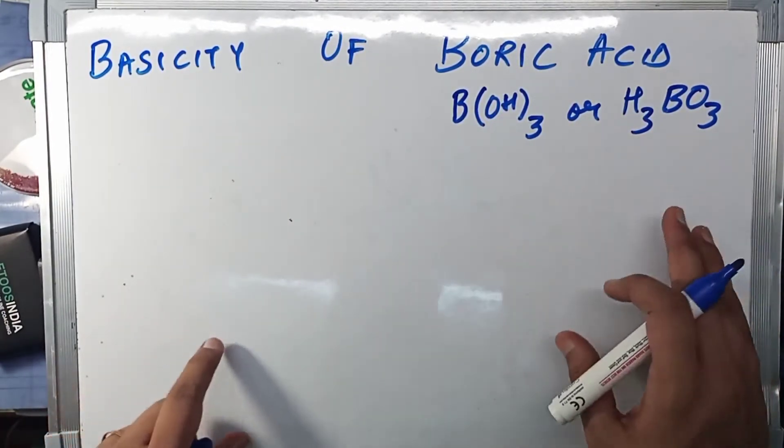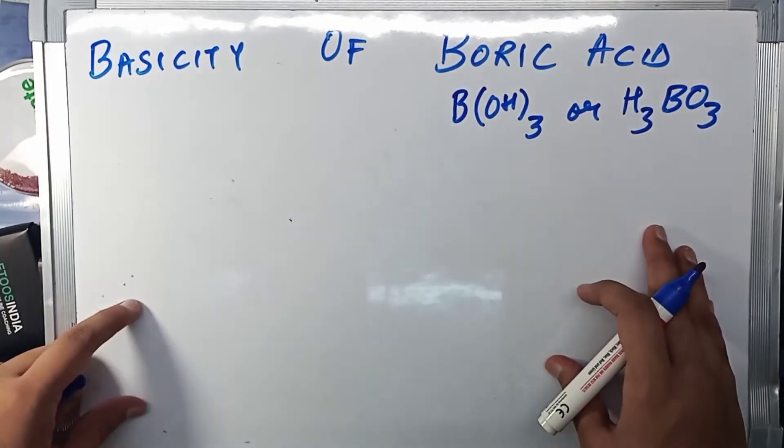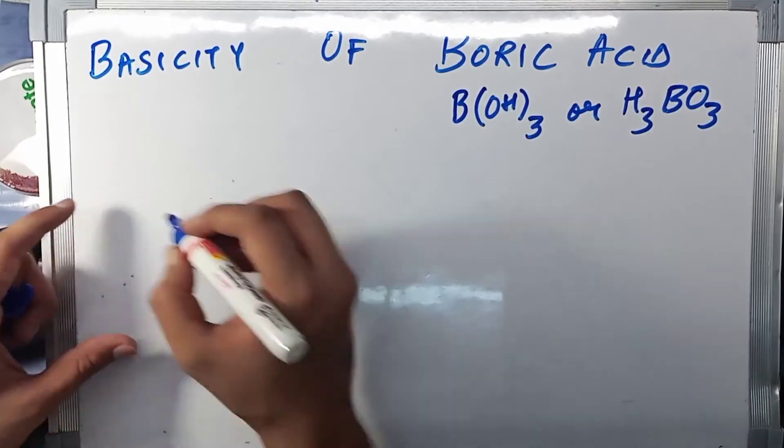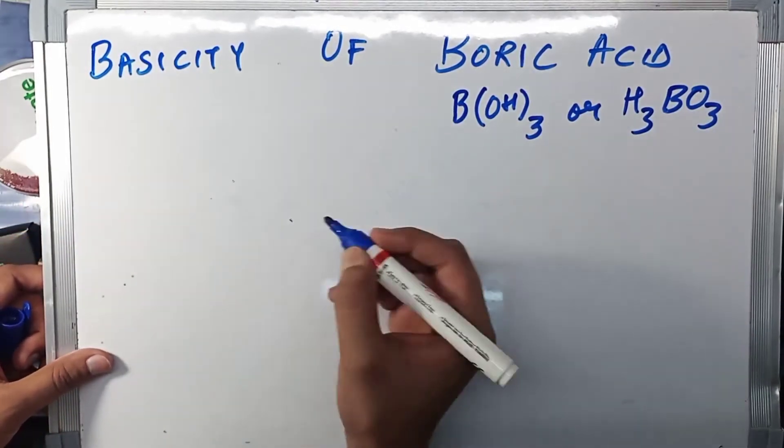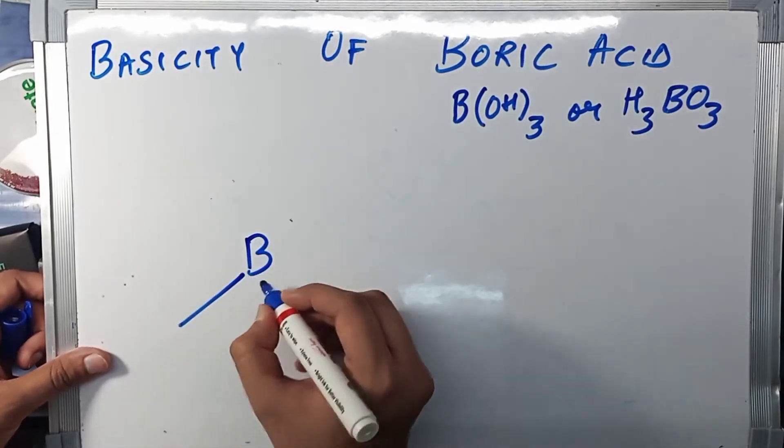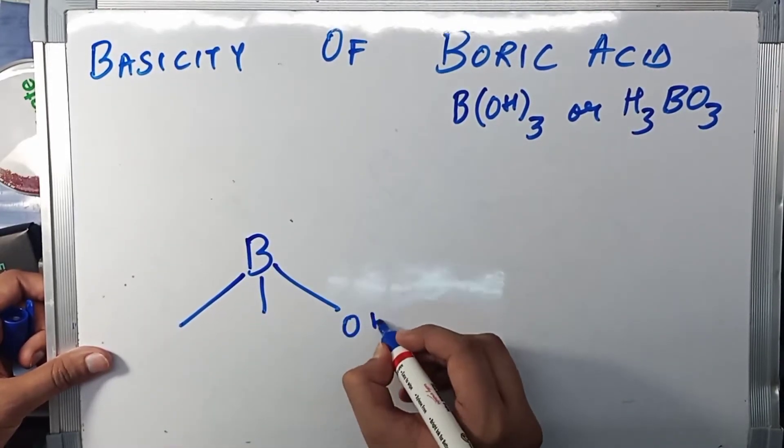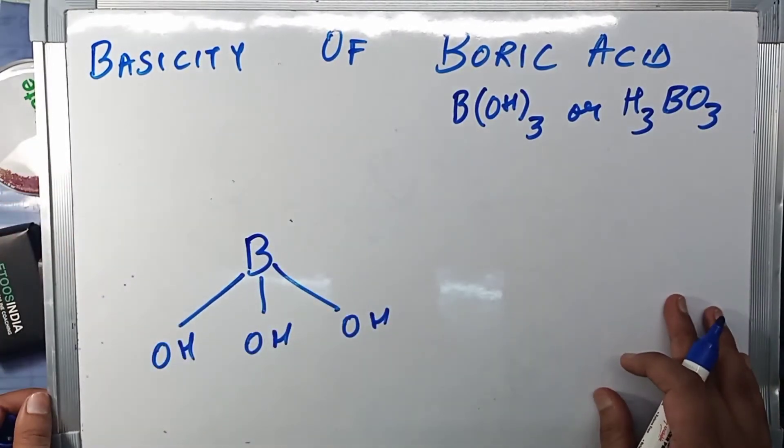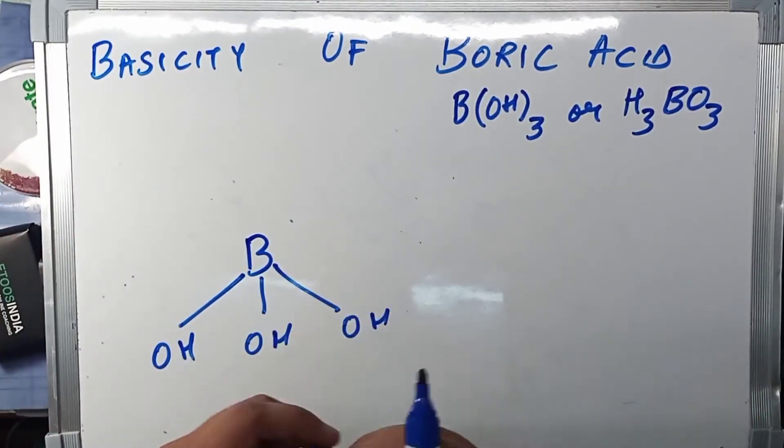We are discussing this particular acid, which is boric acid, so let's begin. First we'll try to draw the structure of boric acid. All right, so the structure of boric acid is this: B with OH, OH, OH. Boron makes three bonds, right?